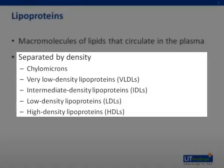The mass of each lipoprotein is made up of cholesterol, triglycerides, apoproteins, and phospholipids. The least dense lipoproteins contain the highest proportion of triglycerides to apoprotein ratio. Therefore, HDL has the least amount of triglycerides and the most amount of apoproteins.